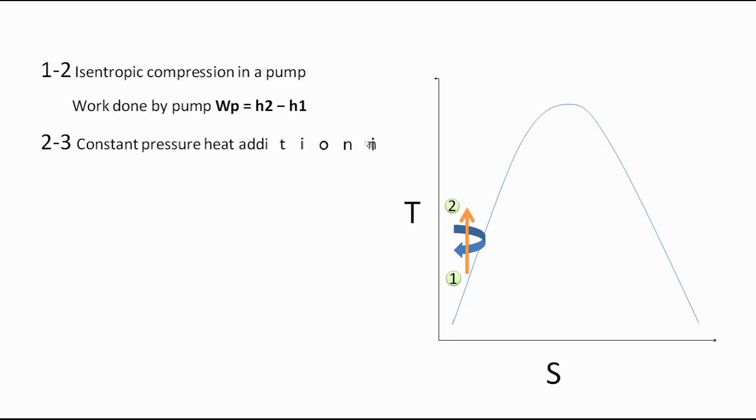Now comes the boiler. In boiler, constant pressure heat addition process takes place. So Qs, or the heat supplied by boiler to water, can be calculated using the formula Qs = h3 - h2. So again, h3 and h2 are the enthalpies of water before and after boiler.